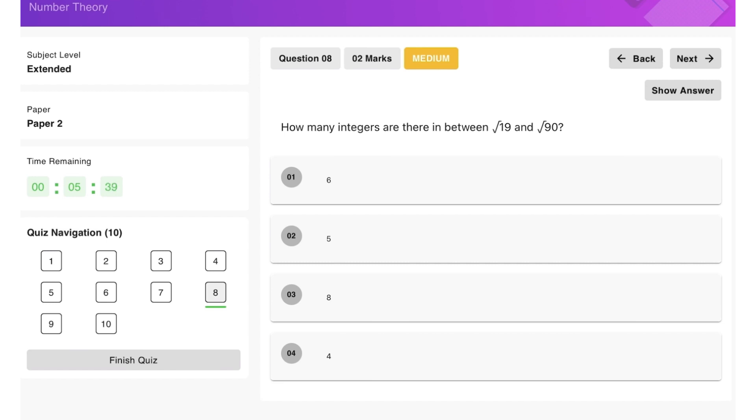Again, another one about integers. So we have square root of 25 this time, which is equal to 5. And the closest to square root of 90 would be square root of 81, which is basically 9. So we're looking at 5, 6, 7, 8, and 9. So therefore, that's 5 integers in between in this range.